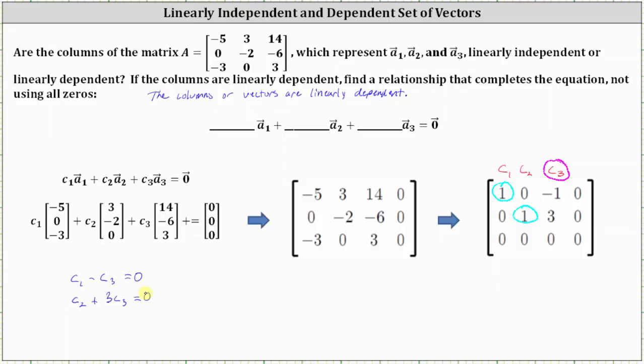And because C sub three is a free variable, we can say C sub three equals C sub three. Let's parameterize the solution by letting the free variable C sub three equal t.